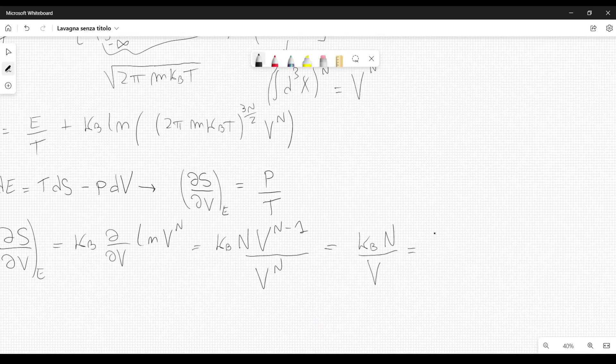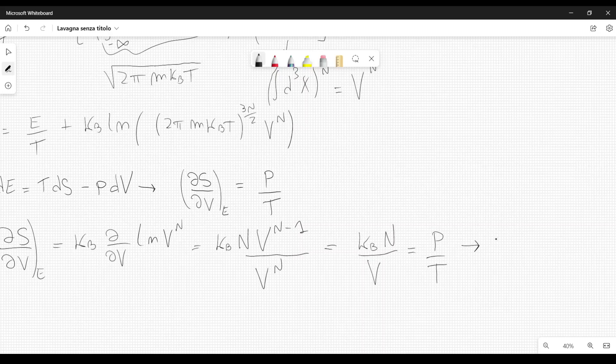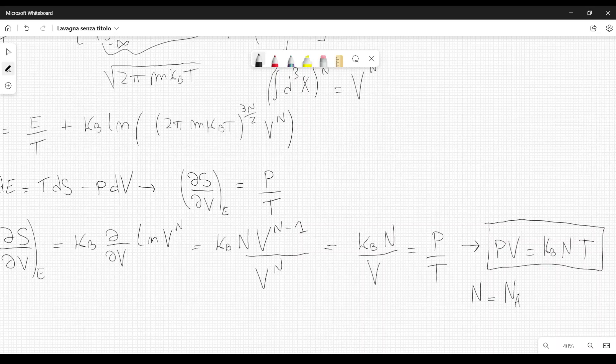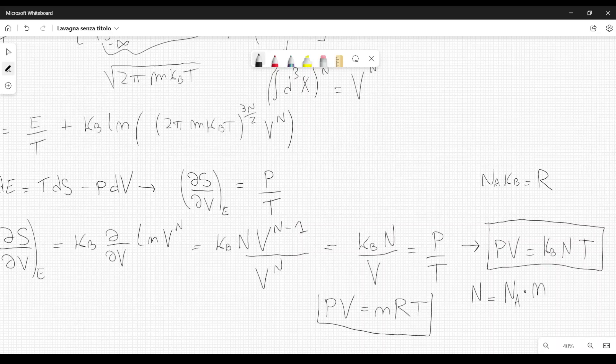But this also equals P over T, from which we get pressure times volume equal K Boltzmann number of particles multiplied by temperature. This is just the ideal gas law, which can be written sometimes in other forms, because the number of particles can also be written as the Avogadro number N_A multiplied by the number of moles of the gas, lowercase n. But N_A times K_B Boltzmann constant is just equal to what we usually call R, which is the ideal gas constant. So P times V can also be written as number of moles times R times T, which is another way of rewriting this.